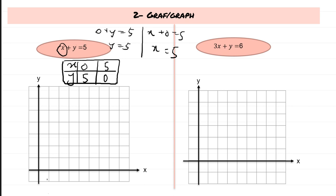Plot the points on a graph. Label the x-axis and y-axis. When x = 0, y = 5 — plot that point. When x = 5, y = 0 — plot that point. Then draw a straight line through both points.